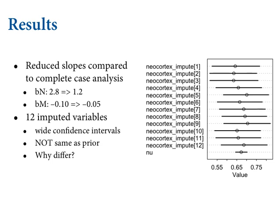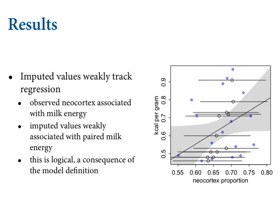The slopes have changed compared to the complete case analysis. When you include all the cases, it does matter — it affects the analysis. The imputed values are tracking the regression, getting nudged around. Neocortex, when observed in these data, is associated with milk energy — that was the whole point. Back in chapter five, you need both these things. Neocortex is associated with milk energy in one direction, body mass in the other. You've got to put them both in the model because there's a masking effect. The fact that there's an association means that when you do imputation, the missing values get nudged — pulled towards this regression line a bit.